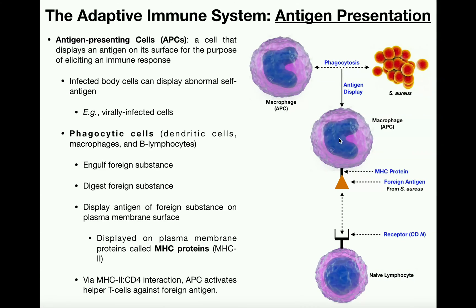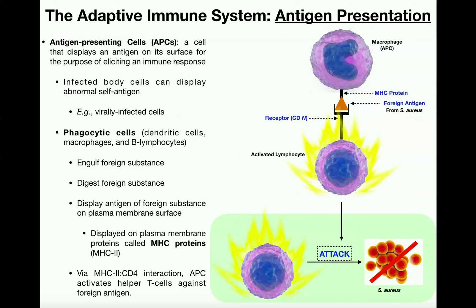The reason this is called an antigen-presenting cell is that it presents this antigen to a naive lymphocyte and causes that naive lymphocyte to differentiate into an activated lymphocyte. So this macrophage, or whichever antigen-presenting cell we have, has now activated this lymphocyte through the interaction between the lymphocyte's receptor and the foreign antigen from our pathogen displayed on the antigen-presenting cell.